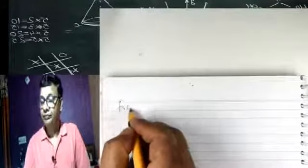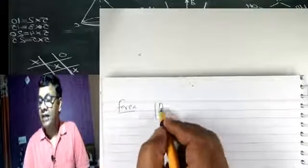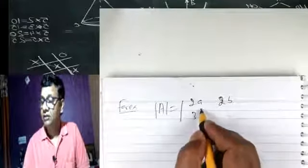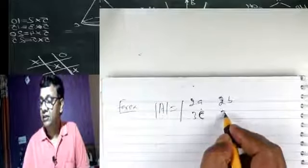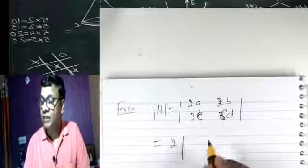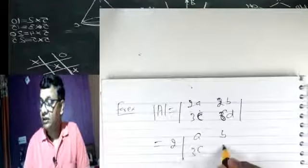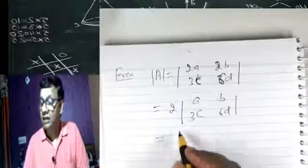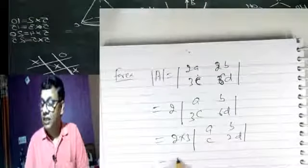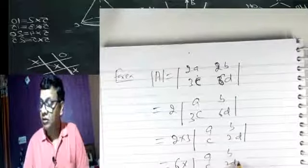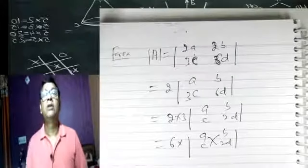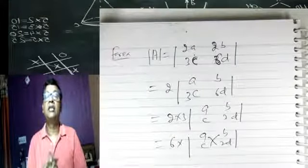For example: determinant |2A, 2B; 3C, 6D|. First row se 2 common nikaaloge, toh A, B bachega. Second row se 3 common nikaaloge, toh C, 2D bachega. So 2×3 = 6 into determinant |A, B; C, 2D| hoga. Kisi ek row ya kisi ek column se hi hum common nikaal sakte hain — yeh baat clear hai.